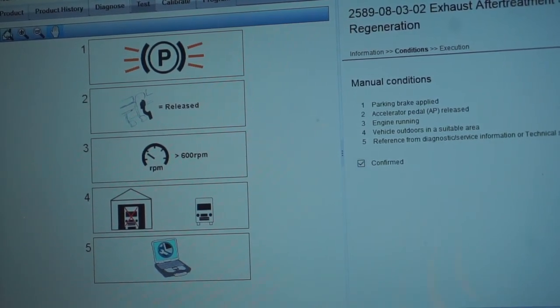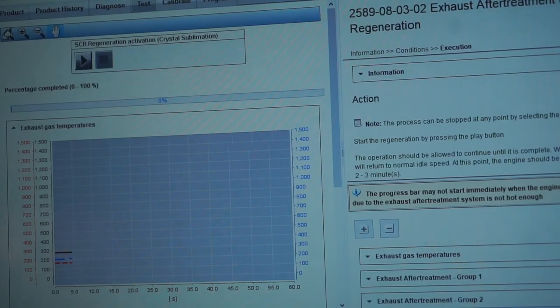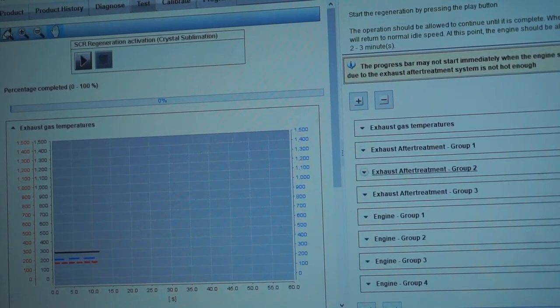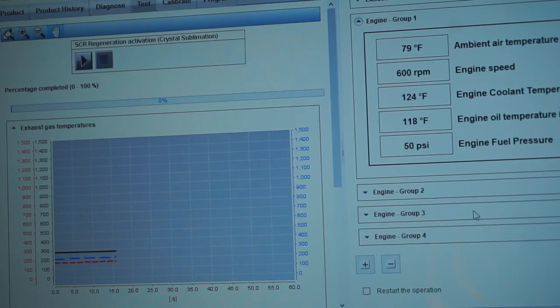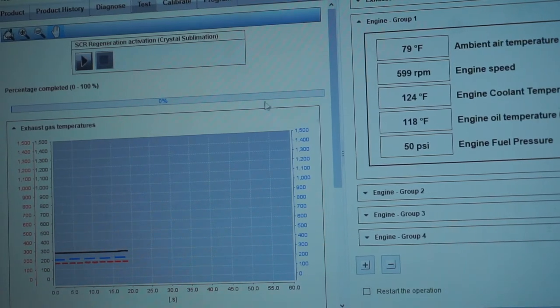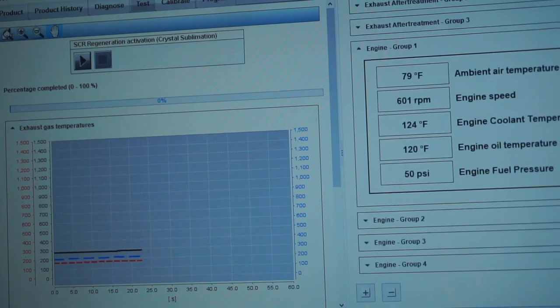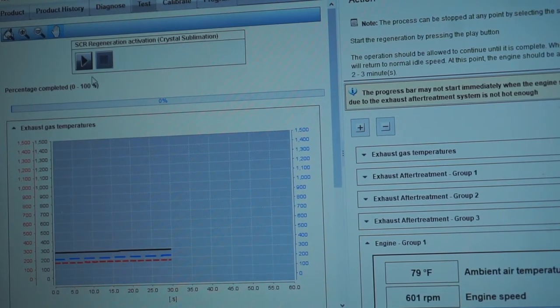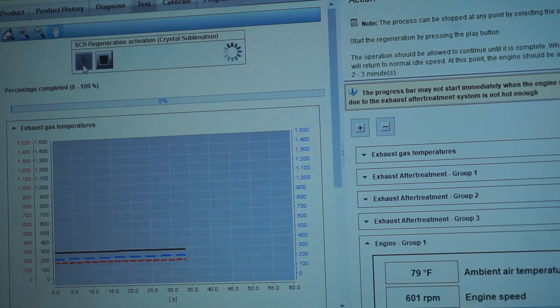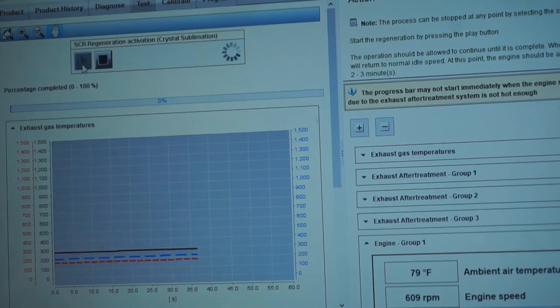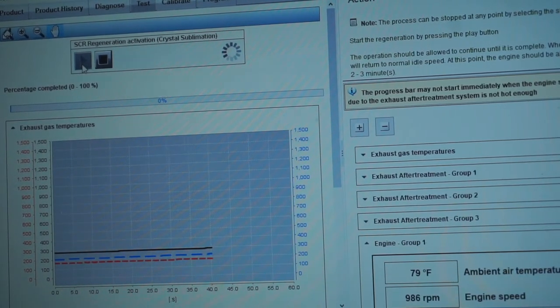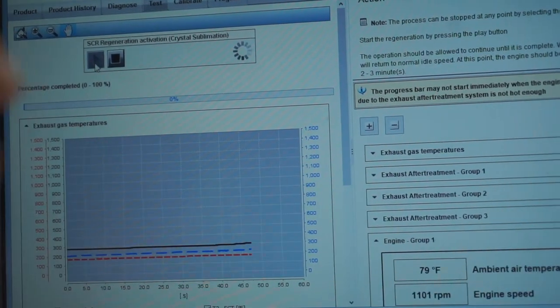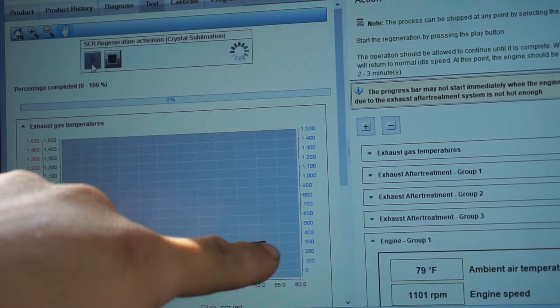Then here it'll give you the parameters on what you need in order to force this regen itself. Once all that is correct, you just click on confirmed, hit continue. Once it brings this up, you're going to come down and look at what the actual engine temperature is. I'm going off this, not the gauge alone. The engine cooling temperature is at 124 degrees. I believe it has to be at 118 or maybe 130 in order to even be able to do it. Once you're ready to go, you'll come up here and see where this little play button is and click it. If everything's good, it'll go ahead and start it.